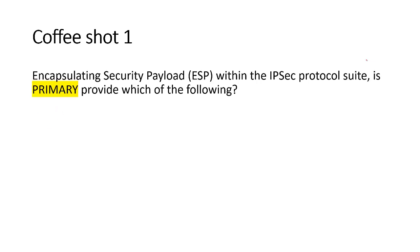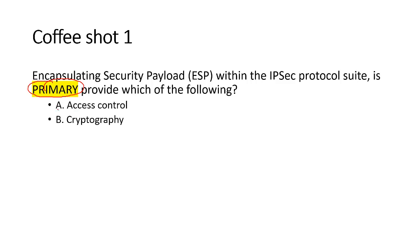First coffee shot: Encapsulation Security Payload within the IPSec protocol suite — the keyword here is 'primarily' — primarily provides which of the following? 'Primarily' is a word used for outcome, no matter if it is asked in CISM, CISA, or CISSP. Option A: access control. Yes, ESP does offer access control. With the help of cryptography, ESP uses cryptographic principles.